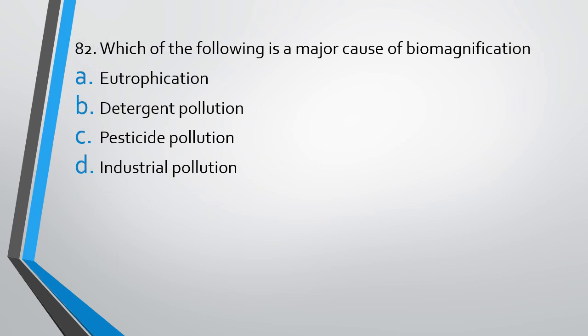Question number 82. Which of the following is a major cause of biomagnification? Eutrophication, detergent pollution, pesticide pollution, or industrial pollution? The correct answer is option C. Pesticide pollution.